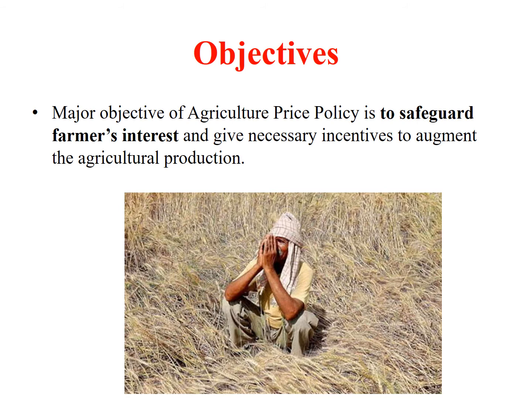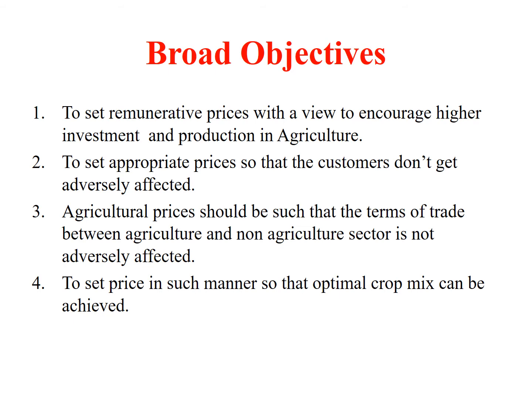We will see the objectives of Agricultural Price Policy. The major objective is to safeguard farmers' interest and give necessary incentive to augment agricultural production. The stability of agricultural prices is essential since higher agricultural prices affect the purchasing power of consumers, which impacts the demand for industrial goods. Broad objectives include: first, to set remunerative prices to encourage higher investment and production in agriculture; second, to set appropriate prices so that consumers are not adversely affected; third, agricultural prices should be such that terms of trade between agriculture and non-agriculture sectors are not adversely affected.